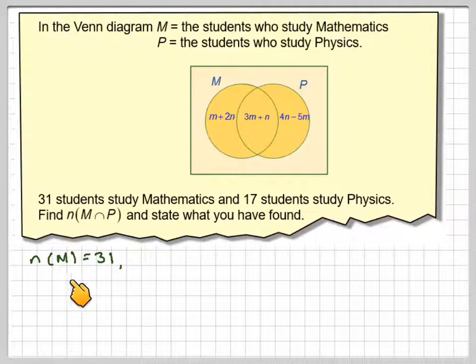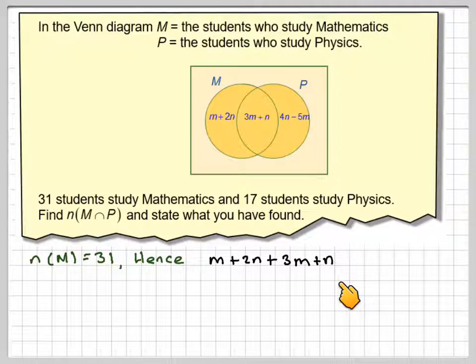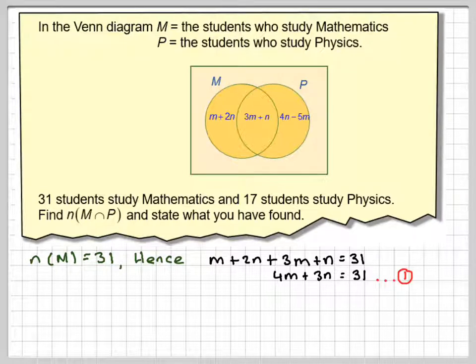So the number in M is 31. We're told that in the question. So all these here are in M. So M plus 2N plus 3M plus N must be equal to 31. That gives me 4M plus 3N equals 31. We'll call that equation 1.